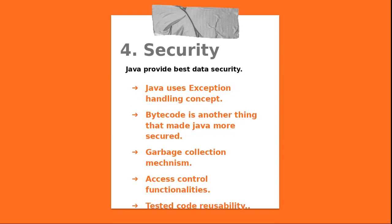The fourth important thing about Java is its security features. Java provides best security features like garbage collectors, access specifiers, and bytecode. The word bytecode is very important when you are learning Java — I will make a separate video on bytecode, so just remember that word. Java also uses exception handling, which is a very important feature.